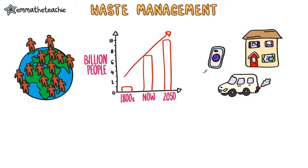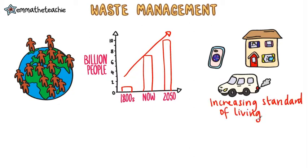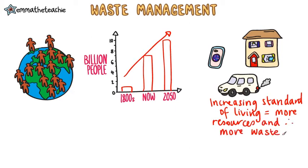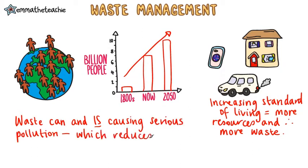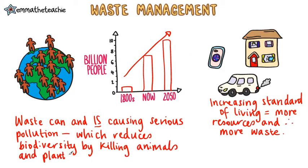In addition to this huge number of people, our standard of living is definitely increasing. This means that we are using more and more resources and producing more and more waste. And if this waste isn't handled properly, it can cause serious pollution which is reducing biodiversity by killing animals and plants.